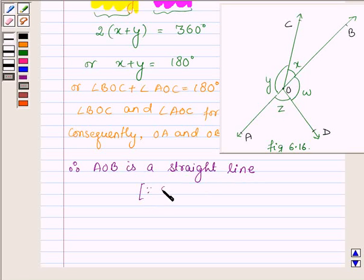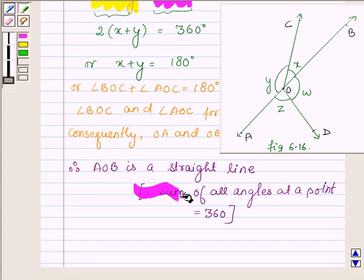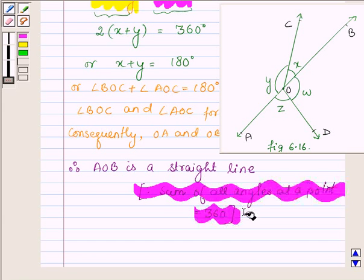Since the sum of all angles at a point equals 360 degrees, we have used this property to prove the above proposition. This completes the solution.